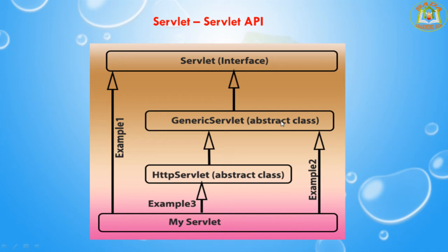The first one is the Servlet Interface, the second one is abstract methods, and the third one is HTTP Servlet. These are the three important interfaces and abstract classes available in the Servlet API. The Servlet API is also called a Servlet specification, which contains a set of rules and guidelines in the form of a PDF document.